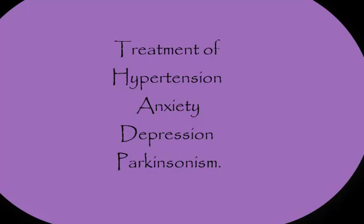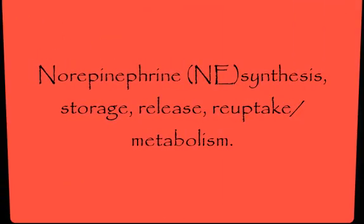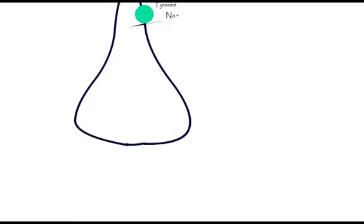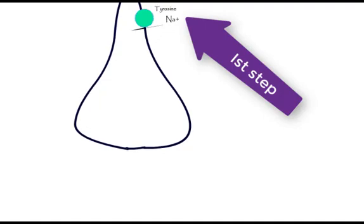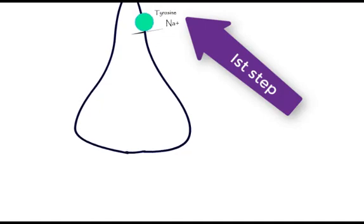Today we will study synthesis, storage, release, reuptake, metabolism, and action of norepinephrine. The first step of synthesis of norepinephrine is transportation of amino acid tyrosine into the noradrenergic nerve terminal by a sodium-dependent carrier.